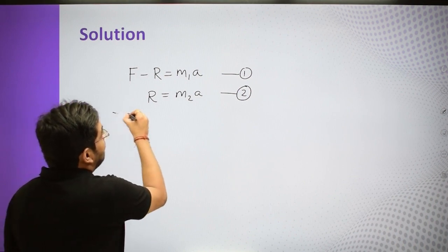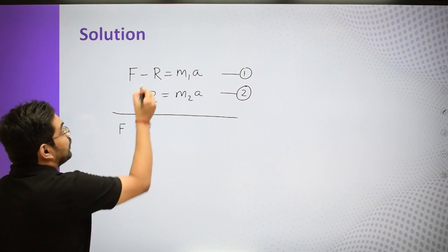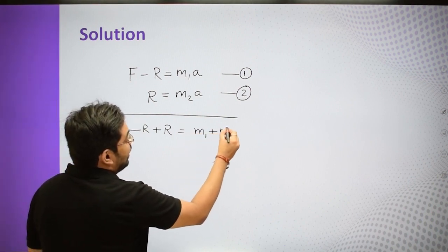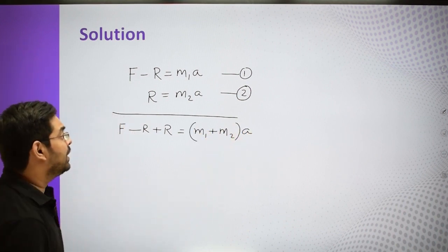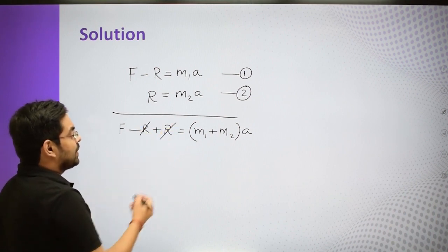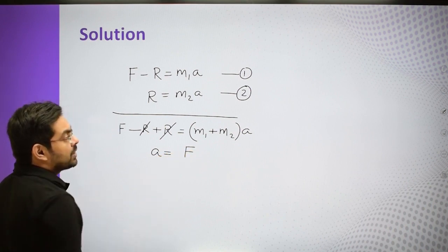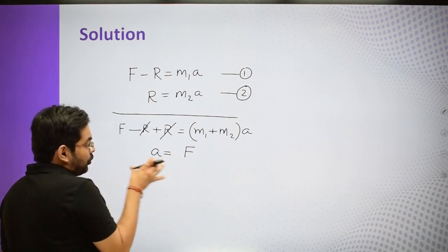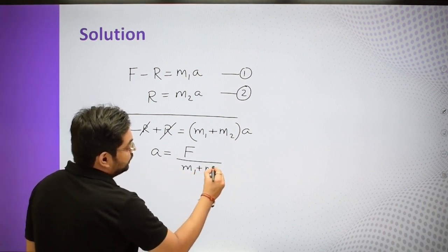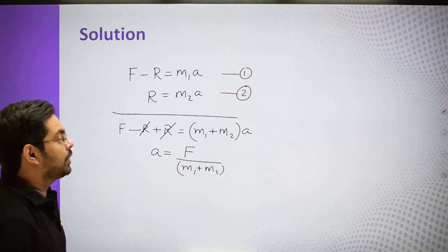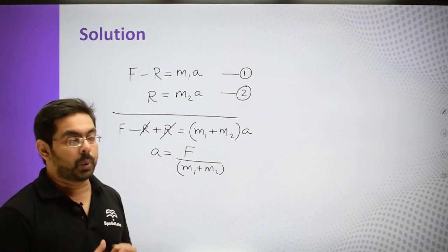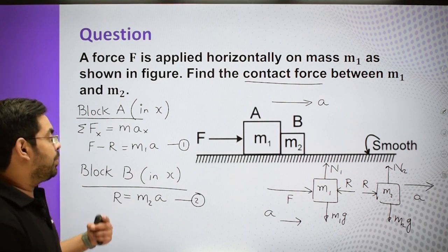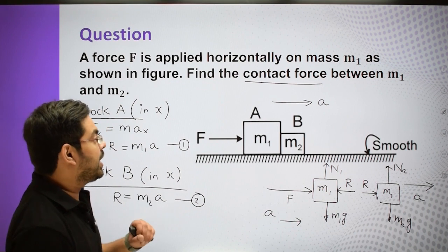Adding both equations: F - R + R = M1·a + M2·a, so F = (M1 + M2)·a. Therefore the acceleration a = F / (M1 + M2). This is the acceleration with which both blocks will move together in the right direction.